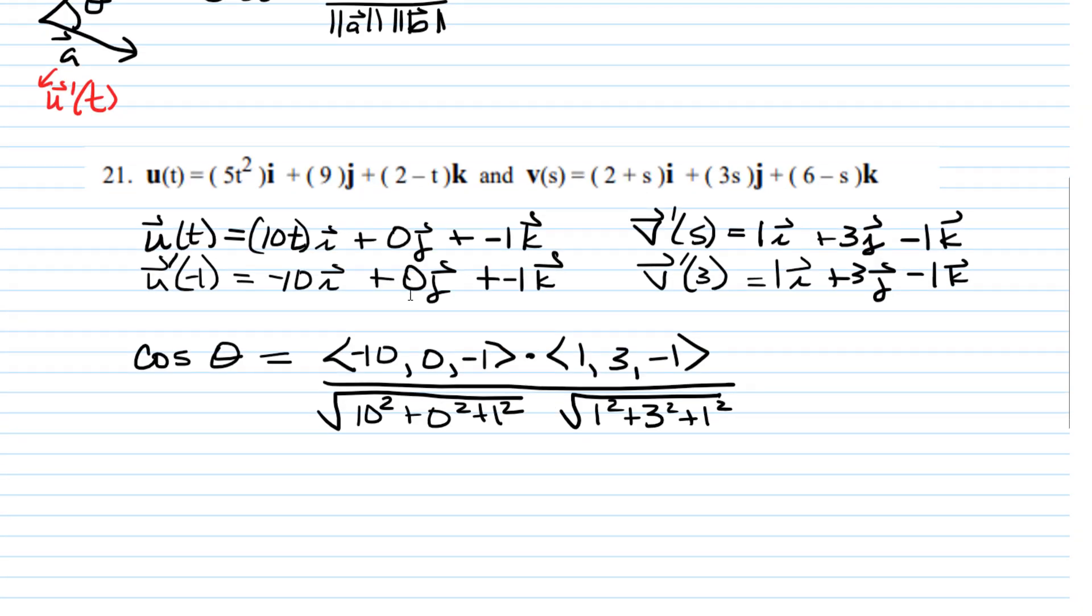All righty. So remember the dot product is going to give you a scalar. You multiply each component and then add those products together. So negative 10 times 1 is negative 10. 0 times 3 is 0. And negative 1 times negative 1 is positive 1. And then in the denominator, we have the square root of 101 times the square root of 11. All right. So that's going to be, let's see, negative 9 in the numerator over the square root of 1111 in the denominator.